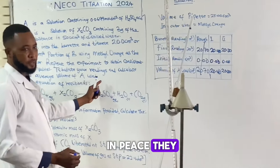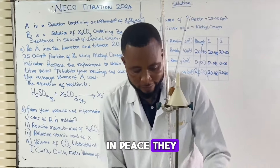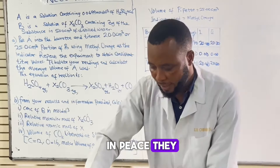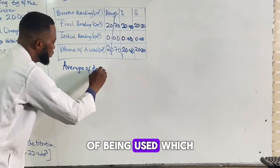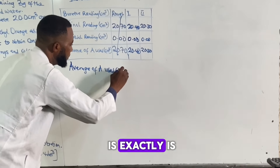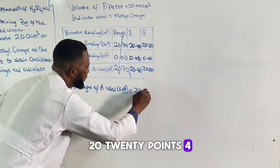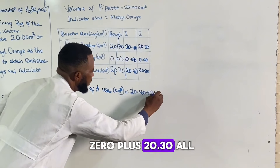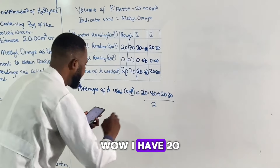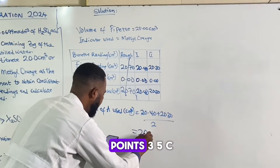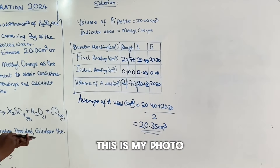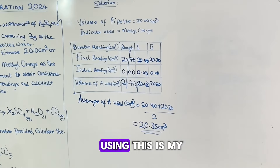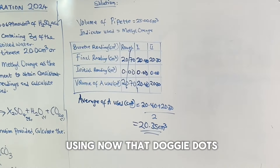Let's calculate the average volume of A used. The average volume of A used is in cm³, and it is (20.40 + 20.30) all over 2. So I have 20.35 cm³. This is my volume of A I'm going to be using. Now, we are done with that. Let's go to question B.